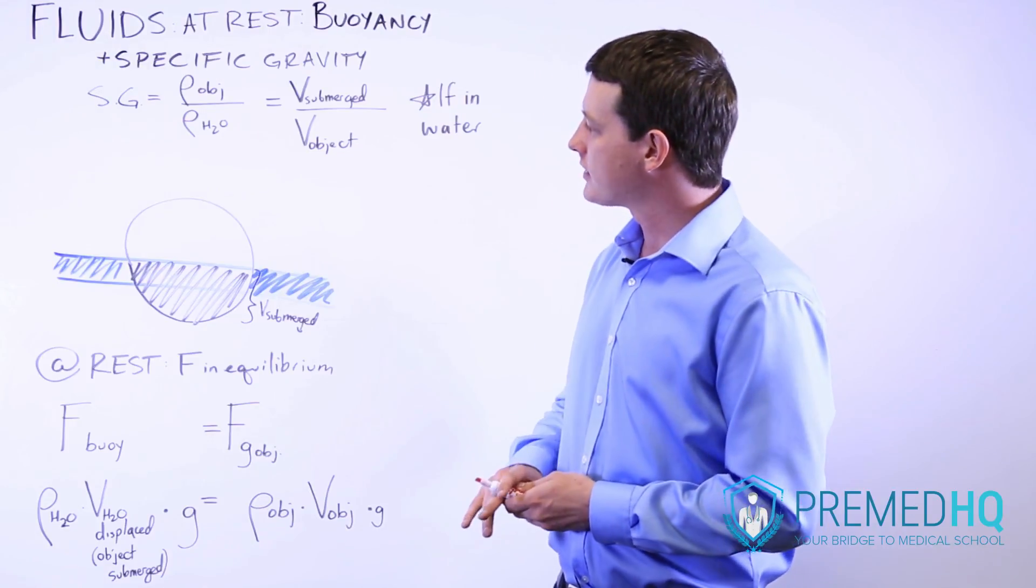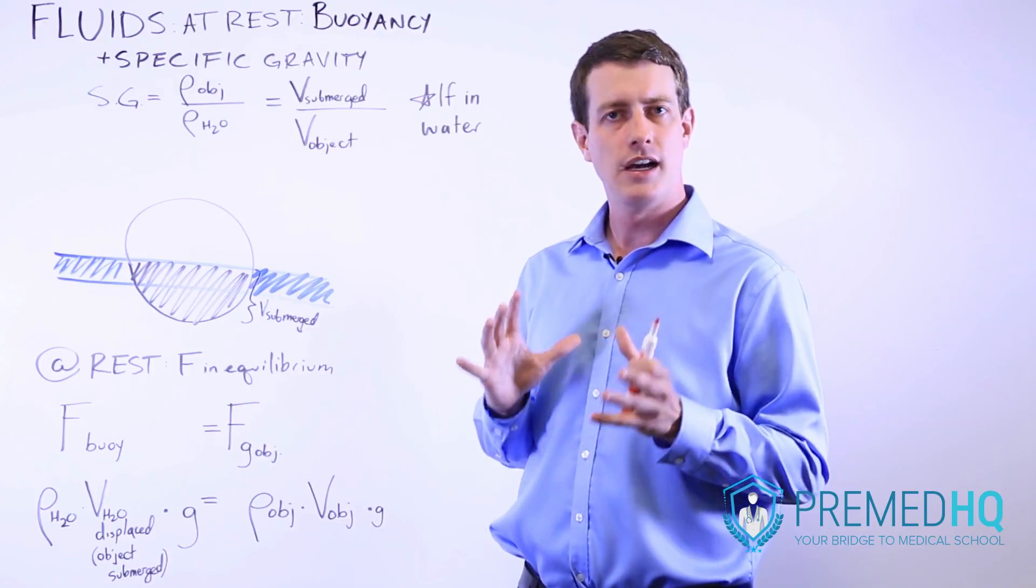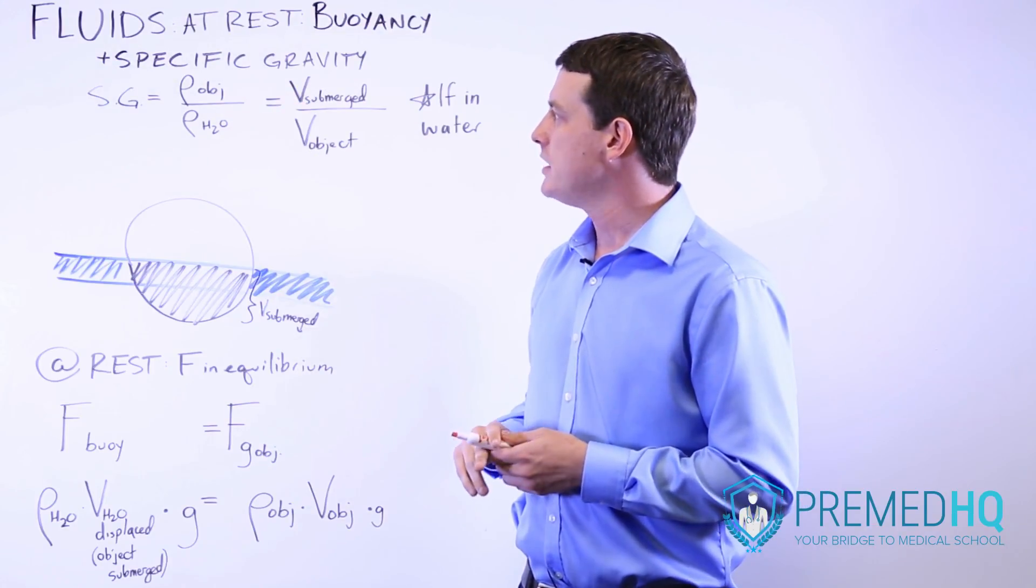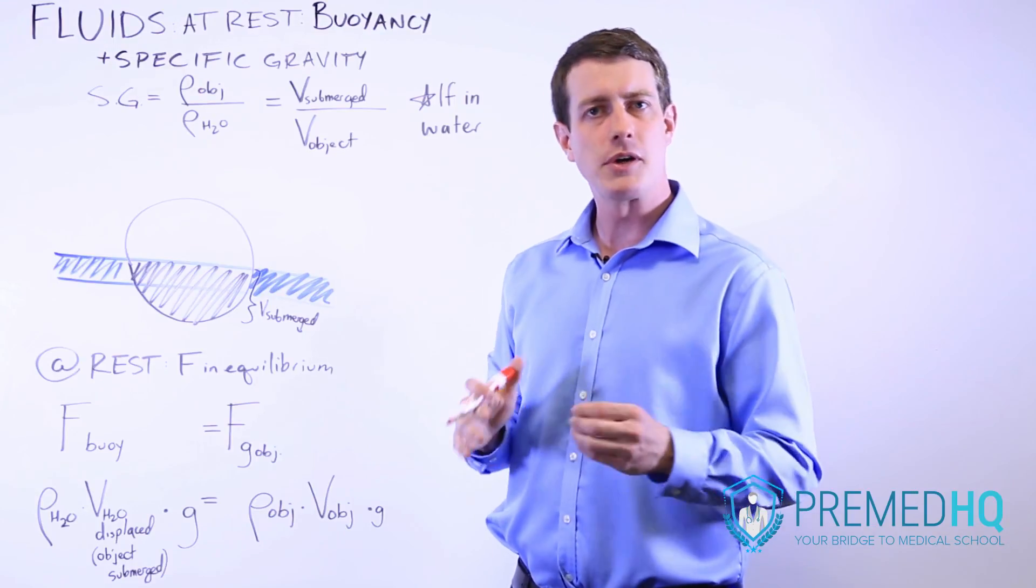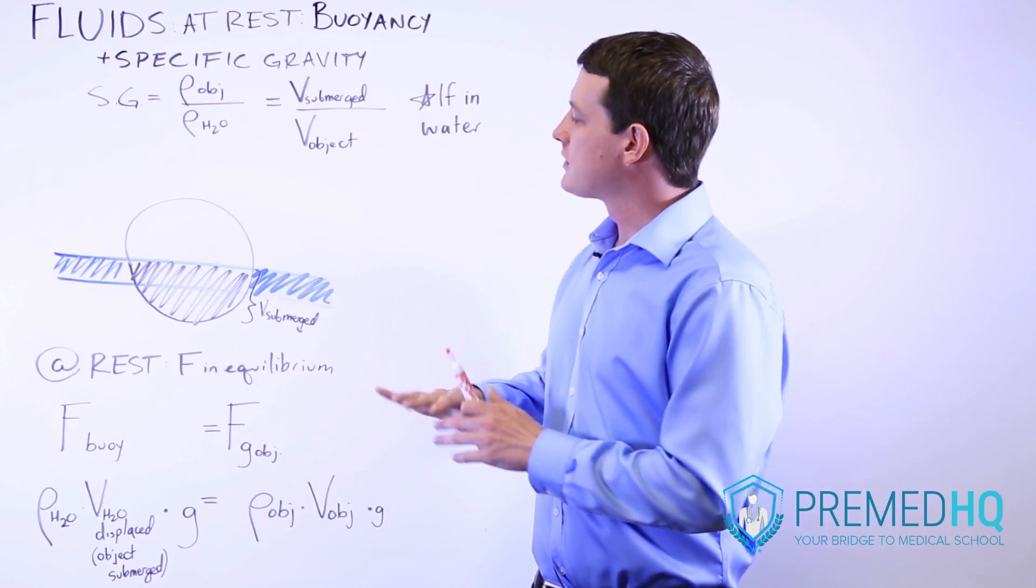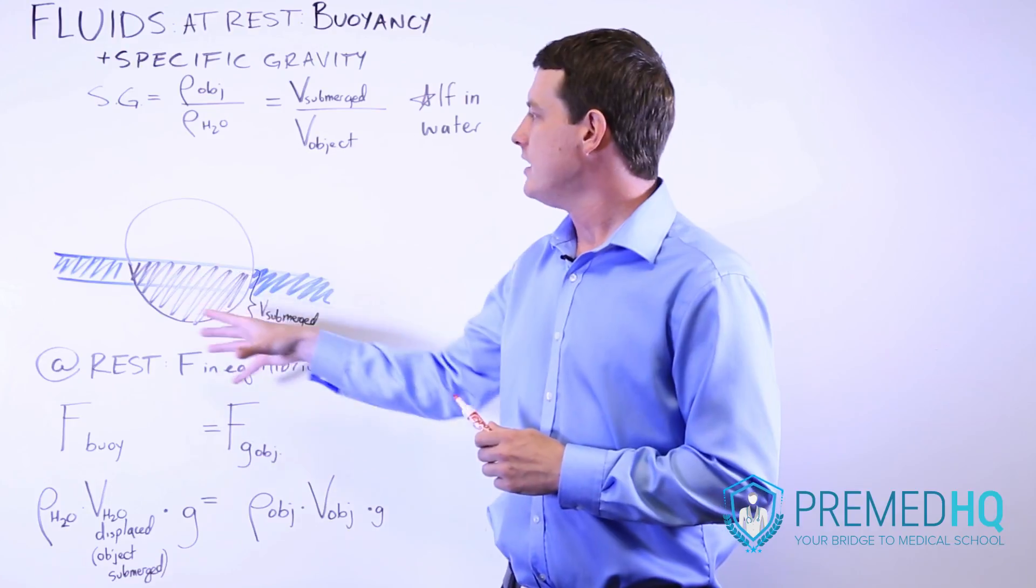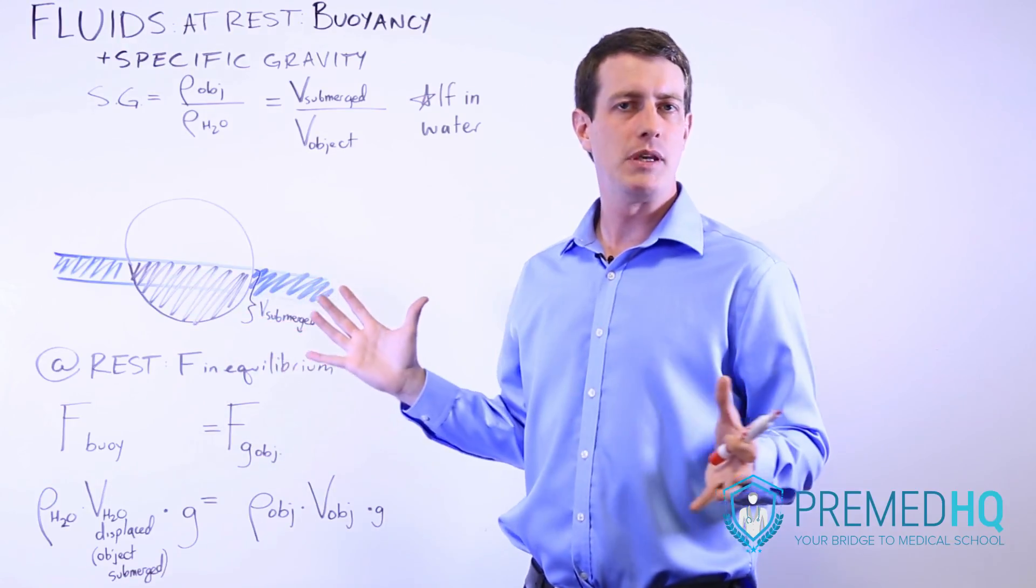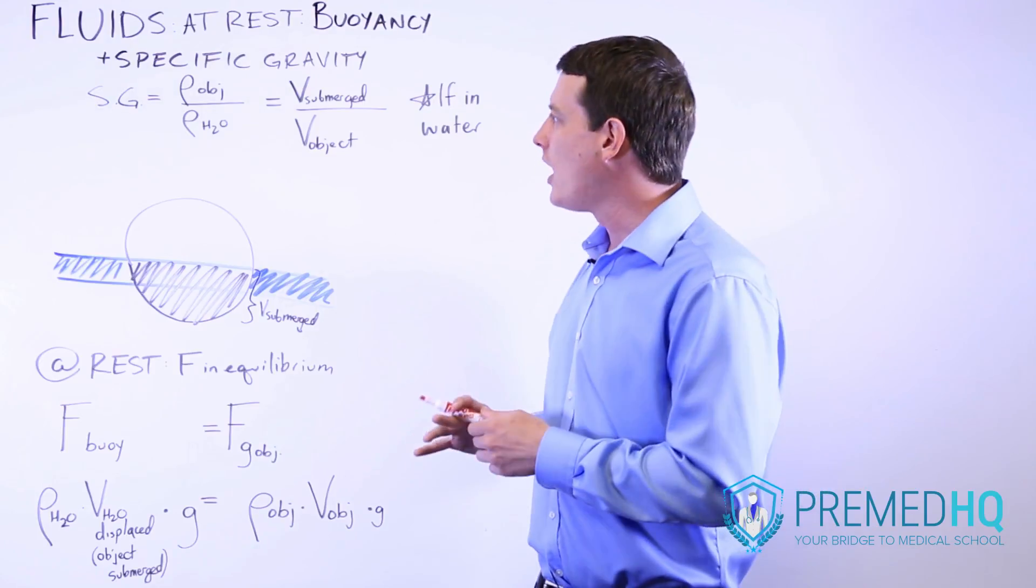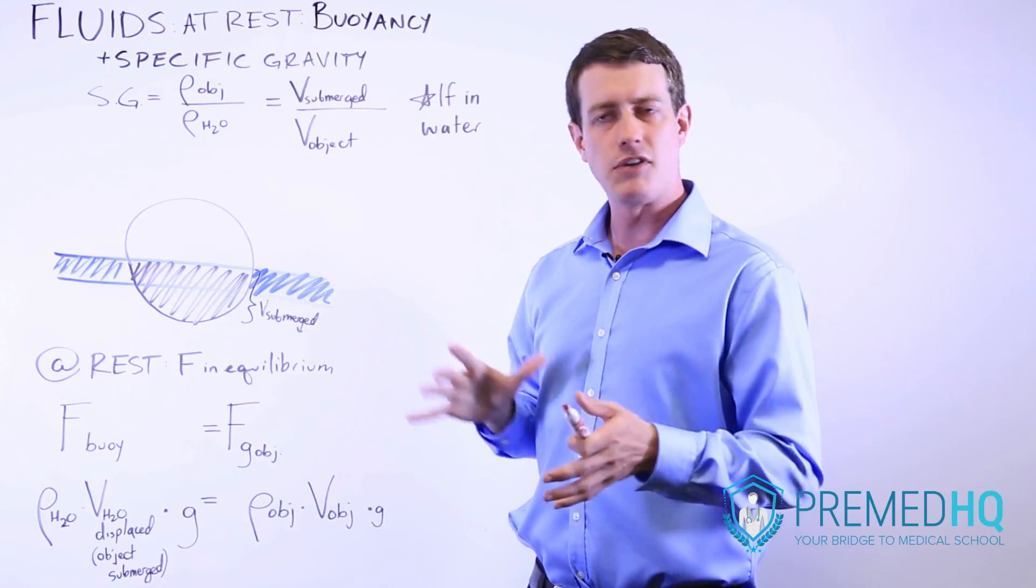Now let's say for example that this object is made of some material that has half the density of water. That means its specific gravity is going to be 0.5. It's going to be half compared to the density of water. Now let's just assume for simplifying these calculations that the volume of this object might be one cubic meter. I think that's a good number to use, and then we can understand why specific gravity can be used to understand these volume relationships.